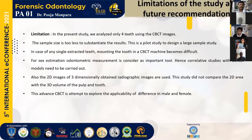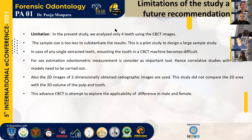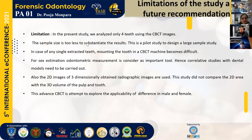Limitations of the study and future recommendations. In this study, we analyzed only four teeth per subject. We can use more teeth, and the sample size is too small to sustain the results — making this a pilot study to design a larger sample study. In cases of a single extracted tooth, mounting that tooth in a CBCT machine becomes difficult for sex estimation. Odontometric measurement is considered an important tool, and a cooperative study with dental models needs to be carried out. Also, 2D images of the three-dimensional radiographic images were used; the study did not compare 2D area with 3D volume of the pulp and the tooth. This advanced CBCT study is an attempt to explore the applicability of differences between male and female.